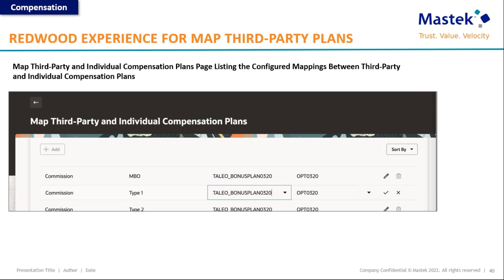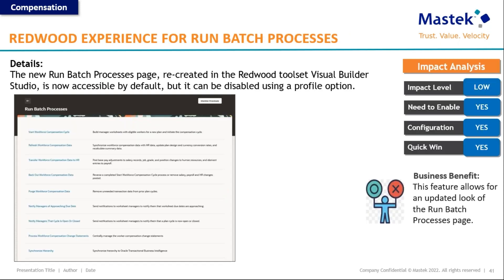Continuing, you can see how in the Redwood UI the page will look for commission, MBO, and other third-party mappings. Moving on, the Redwood experience is now also available for the run batch process page. The new run batch process page created in Redwood Visual Builder Studio is accessible by default. You have the option to disable it if you want to wait a couple more updates before moving your organization to the new user interface.